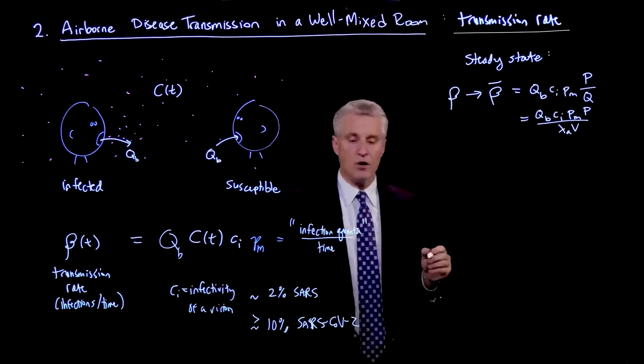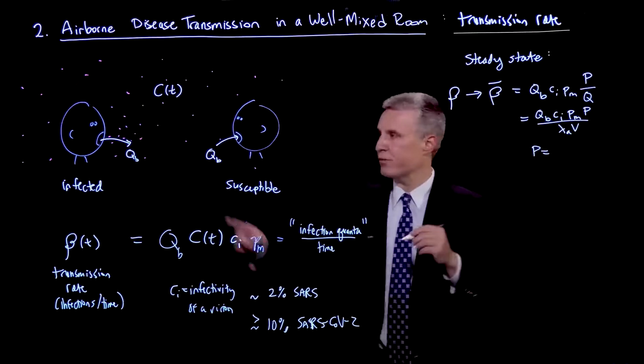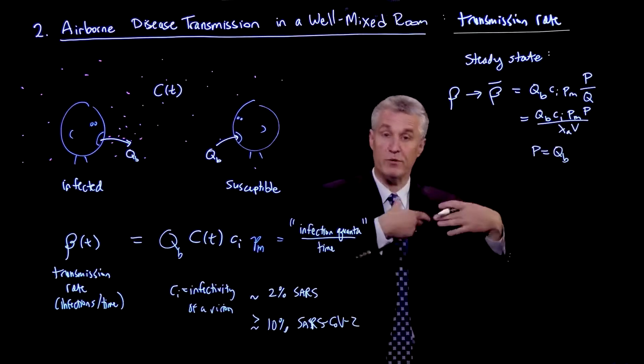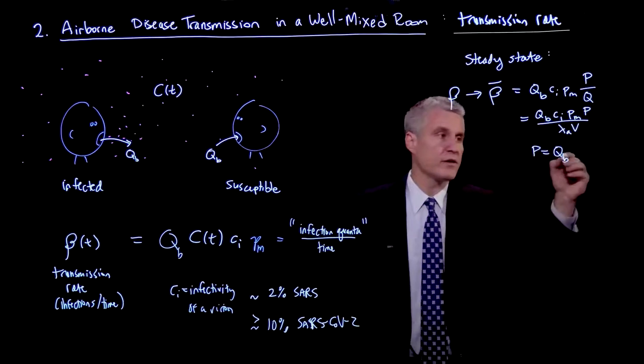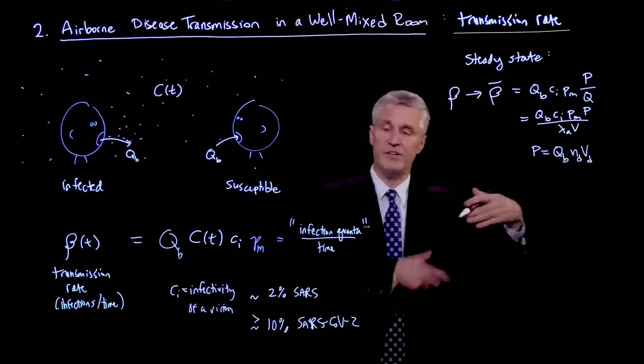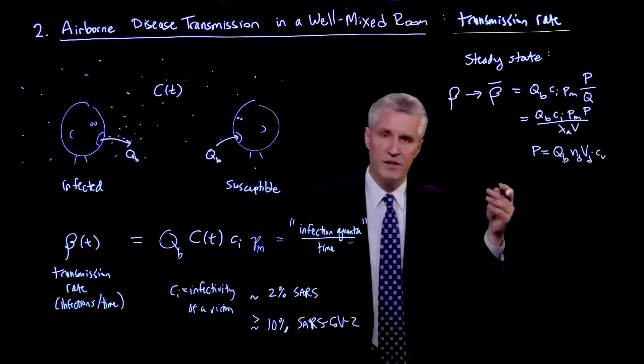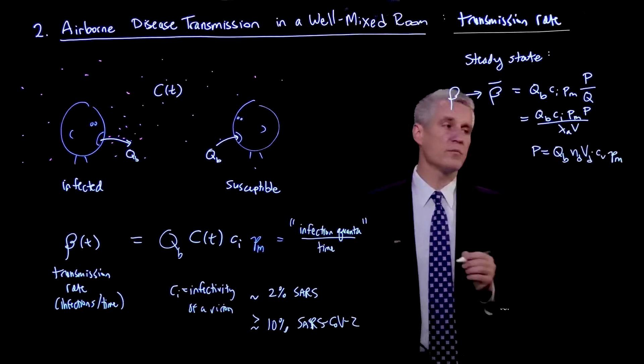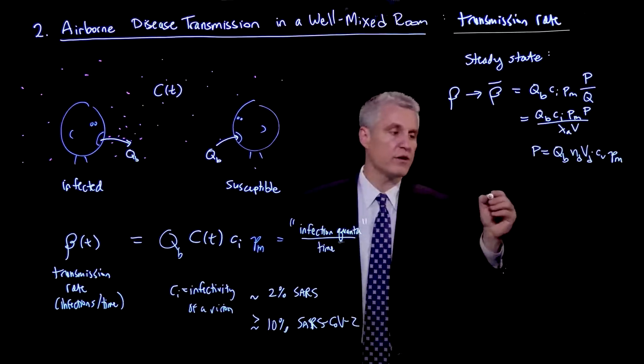Now, recall that the P we had written as the production rate also depends on QB. That's the rate at which the infected person is exhaling infected air. So that was QB times ND, the number of droplets per volume, VD the volume of liquid in a droplet. So this NDVD is the volume fraction of liquid. And then we needed CV, which was the concentration of virions in the liquid or in the fluid. And there's also a factor of PM if that person is wearing a mask.